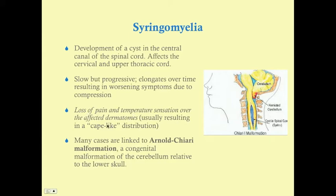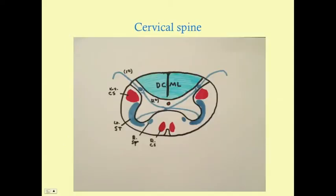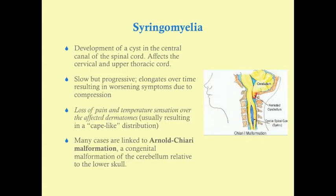Syringomyelia causes loss of pain and temperature sensation over the affected dermatomes. Pain and temperature are carried by the spinothalamic tract. The spinothalamic tract decussates right away, meaning it has to cross the middle of the spinal cord. Since the central canal is in the middle of the spinal cord, anything that enlarges that canal will compress the decussating spinothalamic fibers. Classically on the USMLE, syringomyelia affects the spinothalamic tract. Other tracts can be affected if the syrinx gets very large, but the spinothalamic tract is the primary one.